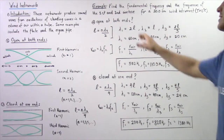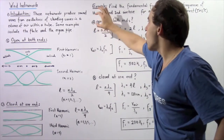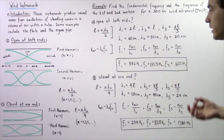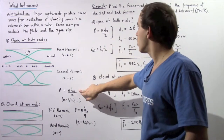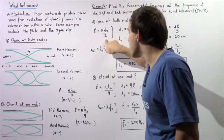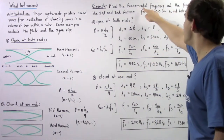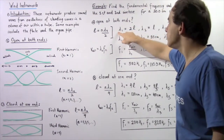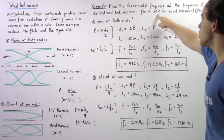Let's apply these two formulas in the following example: find the fundamental frequency and the frequencies of the first and second overtone for a 30-centimeter wind instrument when the column of air is at 0 degrees Celsius. Part a considers the open instrument at both ends, and part b considers the instrument closed at one end. We begin with part a, applying L equals n times lambda-n divided by 2. Starting with the fundamental frequency, n equals 1, so lambda-1 equals 2 times L.